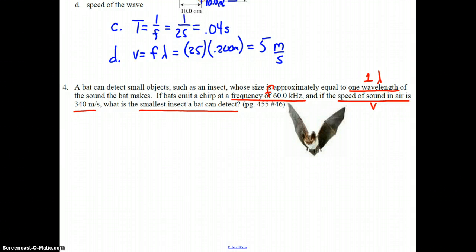Since the smallest insect a bat can detect equals one wavelength, what they're really asking us to solve for is the wavelength, and hence we know the size of the insect the bat can detect. So we start with our wave equation: V equals f lambda. We're told our speed of sound in air is 340. We're told the frequency that the bat is emitting is 60 kilohertz, 60 times 10 to the third hertz.